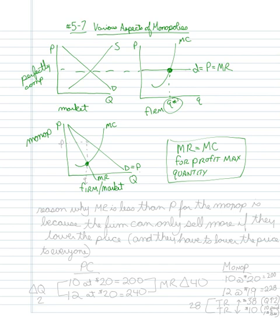Now, MR equals MC. That's determining my quantity. But now I have to go up to the demand curve to find the price. Again, what I did was I set MR equal to MC, and then I have to go up to the demand curve to find the price.